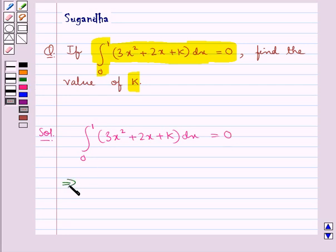Now integrating this we get 3 times x cubed over 3 plus 2 times x squared over 2 plus k times x, and the limits are from 0 to 1, equal to 0.